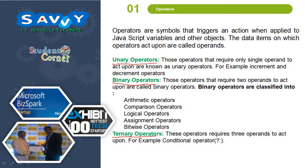Unary Operators: those Operators that require only a single Operand to act upon are known as Unary Operators — for example, Increment and Decrement Operators. Binary Operators: those that require two Operands are called Binary Operators. Ternary Operators require three Operands to act upon — for example, the Conditional Operator.